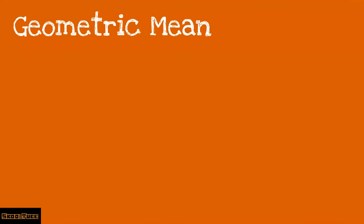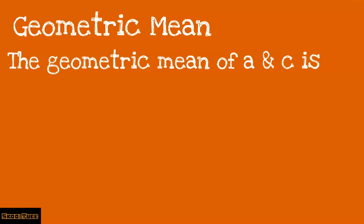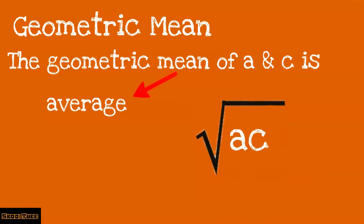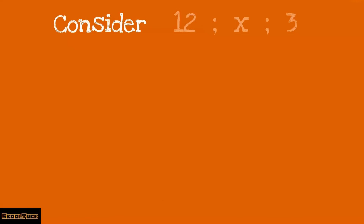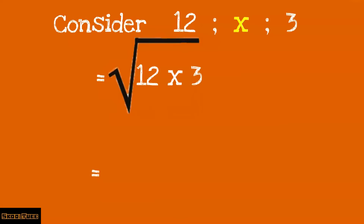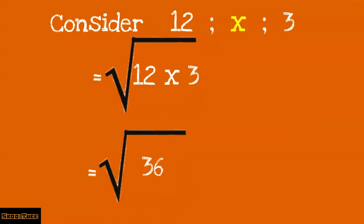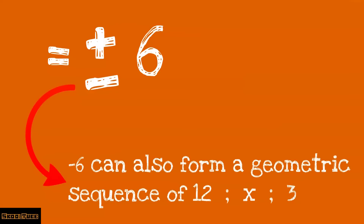Now let us find the geometric mean. The geometric mean of A and C — remember the mean is an average — is the square root of A multiplied by C. Consider the geometric sequence 12, X, and 3. The geometric mean is the square root of 12 multiplied by 3, which is the square root of 36, giving plus or minus 6. Our sequence will be 12, 6, and 3. Note that negative 6 can also form a geometric sequence 12, X, 3 with an opposite sign of the constant ratio.